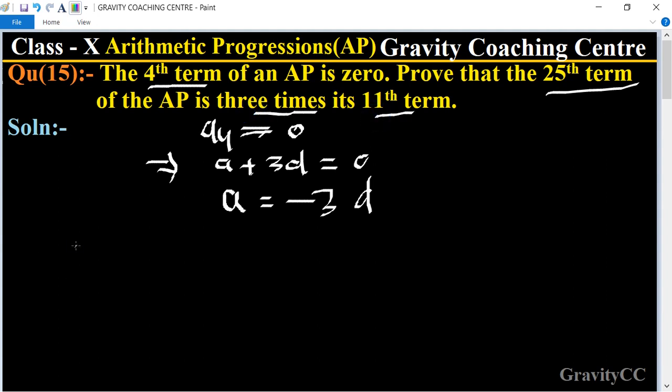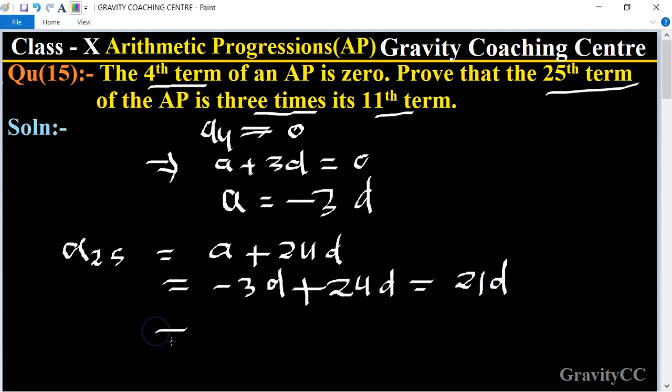First we find a₂₅. So a₂₅ equals a plus 24d. Putting the value of a, which is minus 3d, we get minus 3d plus 24d, which equals 21d.